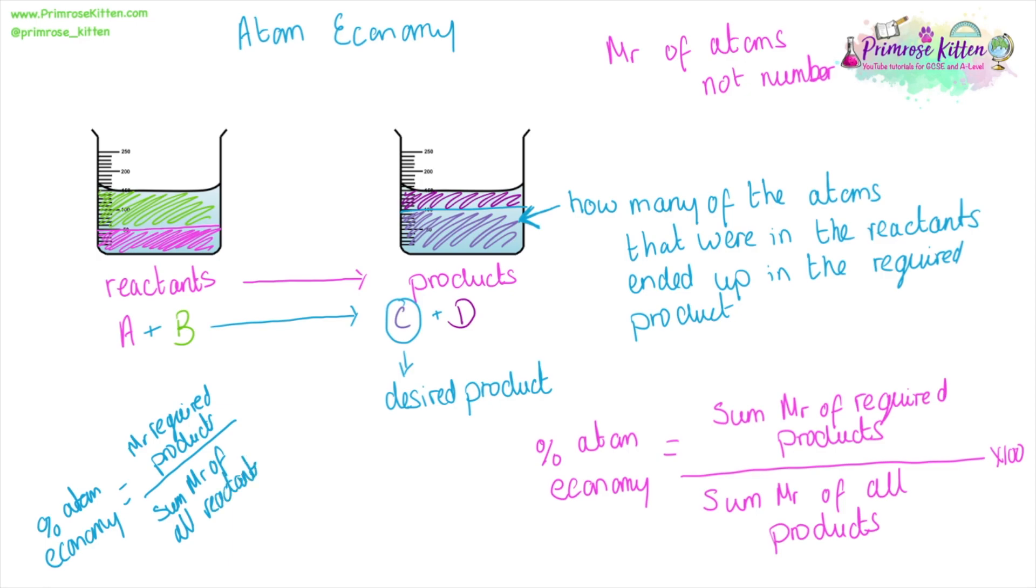If your equation is balanced, the total sum mass of all the reactants should be equal to the total sum mass of all the products. This is a really useful thing that we can do to check our equations, to check that we haven't missed anything or balanced our equations incorrectly, because the mass of all the reactants will equal the mass of products. We're not losing or gaining anything in a reaction. Everything is conserved.